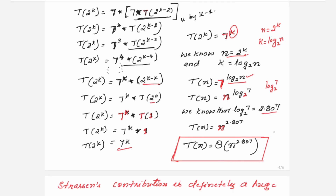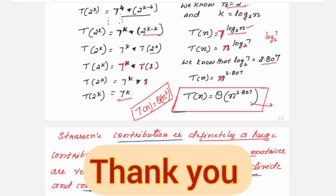The value of log₂ 7 is 2.807, so substituting gives T(n) = n^2.807. This is the time complexity obtained using Strassen's matrix multiplication method. For the traditional method it was Θ(n³). Here we got n^2.807. Though the difference may seem slight, it gives a greater impact when n is larger. Strassen's has proved that it reduces the time complexity for multiplying an n×n matrix, and you can see a significant difference in time when multiplying matrices with larger dimensions. Hope you find this session helpful. Please like, share, and subscribe.